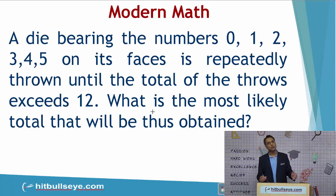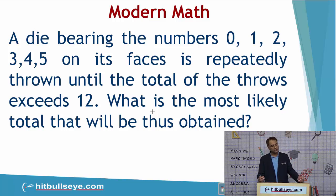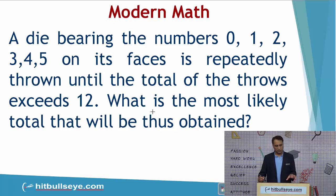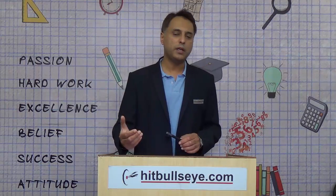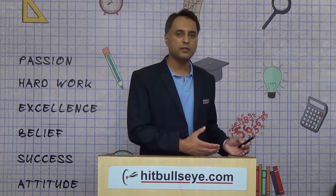Let's understand this challenge through a question from this module. A die bearing the numbers 0, 1, 2, 3, 4, 5 on its faces is repeatedly thrown until the total of the throws exceeds 12. What is the most likely total that will thus be obtained? Students typically have an inherent antipathy for these topics. When a student sees the phrase 'most likely total,' it signals probability, and the student tends to hold back, feeling it is their weakness.